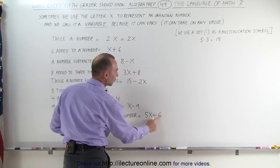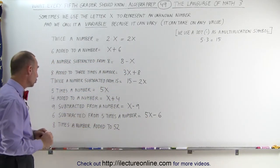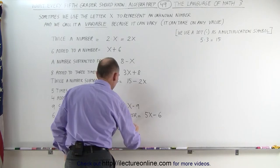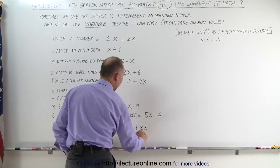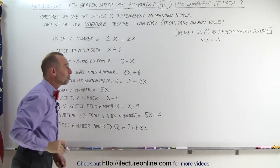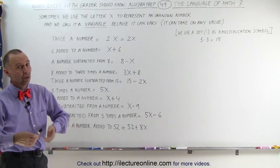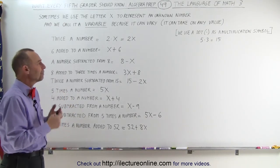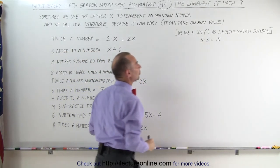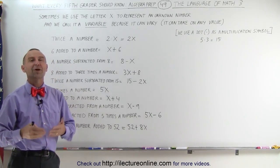Finally, '8 times a number added to 52': 8 times a number is 8X, we add it to 52, so we write 52 plus 8X. That's how we take an English expression and turn it into a mathematical expression. When we have an unknown number — one we don't know — we simply call it X, Y, or Z; it doesn't matter. In this example we called it X, and because we use X as the unknown number, we typically use a dot instead of an X symbol for multiplication so we don't get things confused. And that's how we use the language of mathematics.